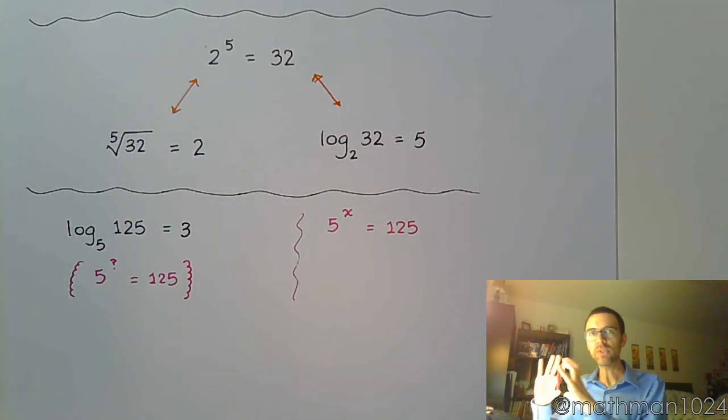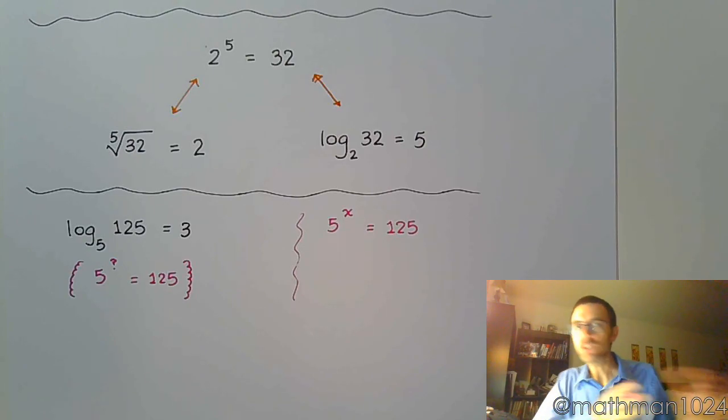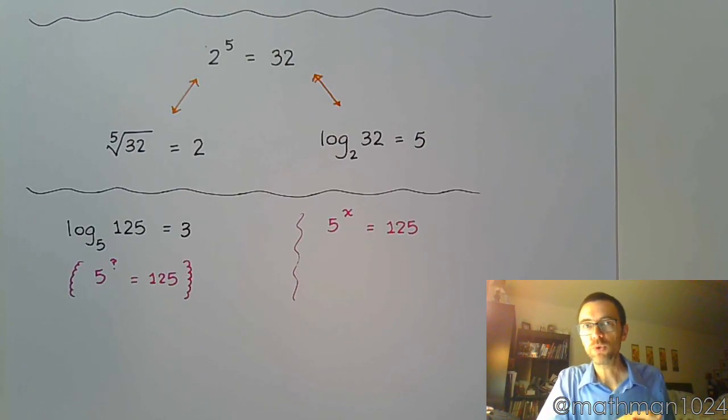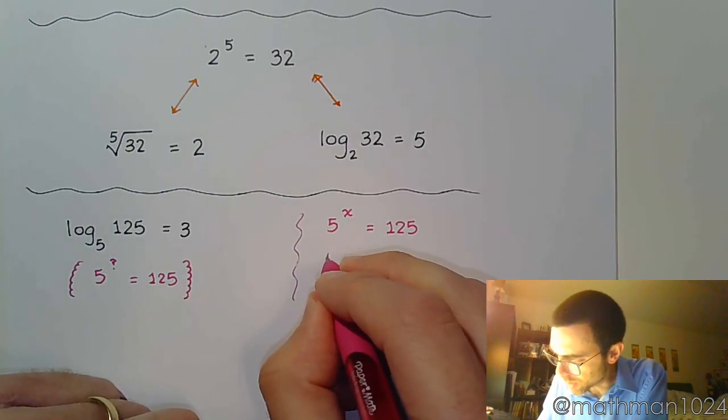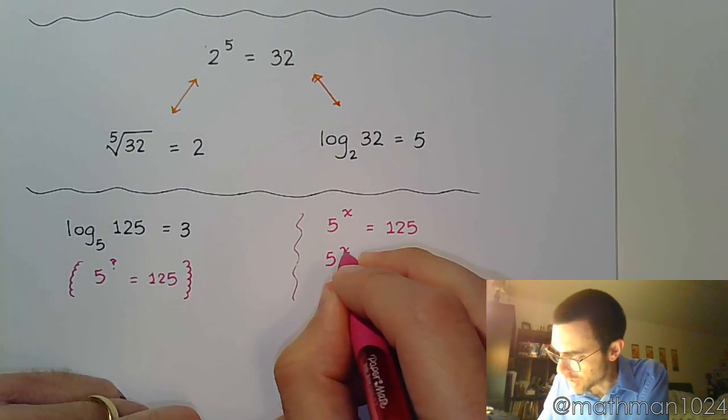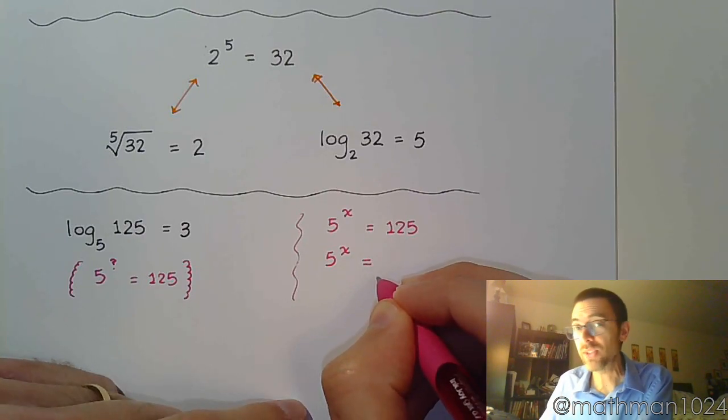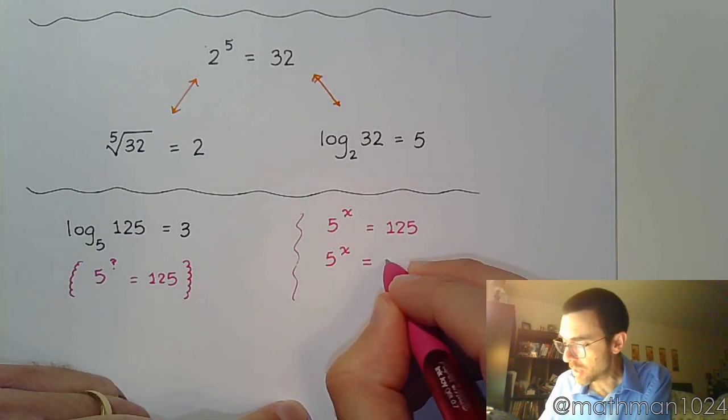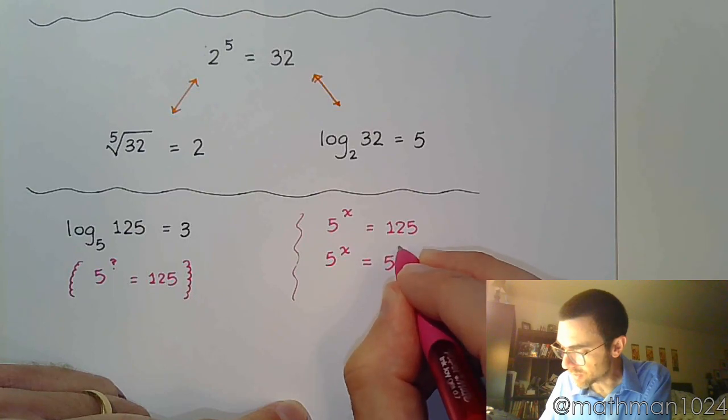And so what you do is that you get out of this realm of logarithms and you go back to something that you may be more comfortable with, which would be exponential equations. And remembering what we saw with exponential equations a few videos ago, if we can write each side of the equation with the same base, we're in good shape. So 125 we know is 5 to the third.